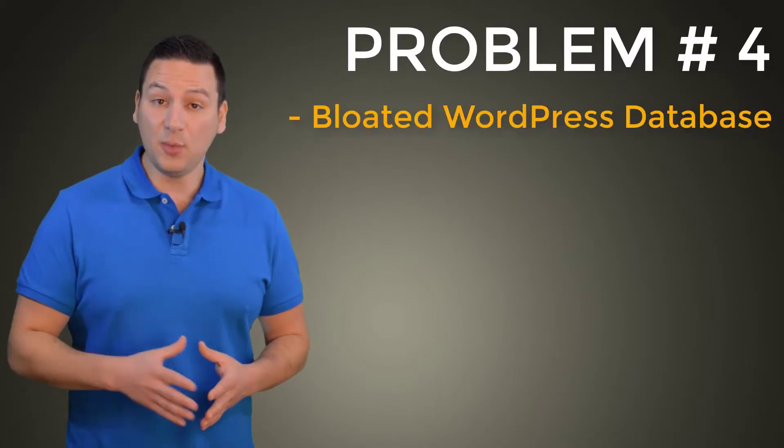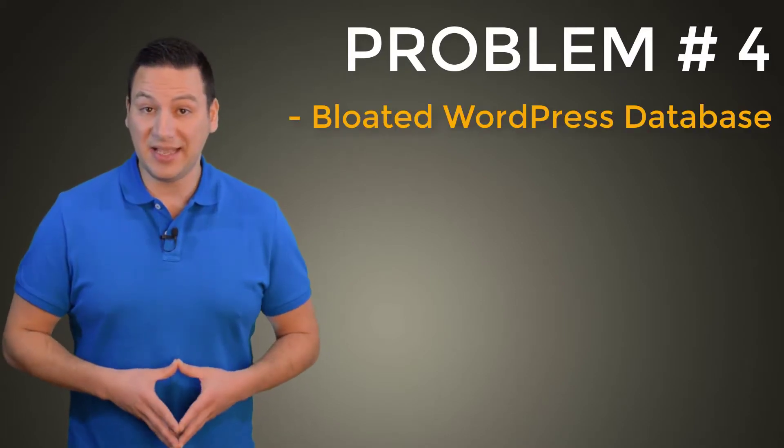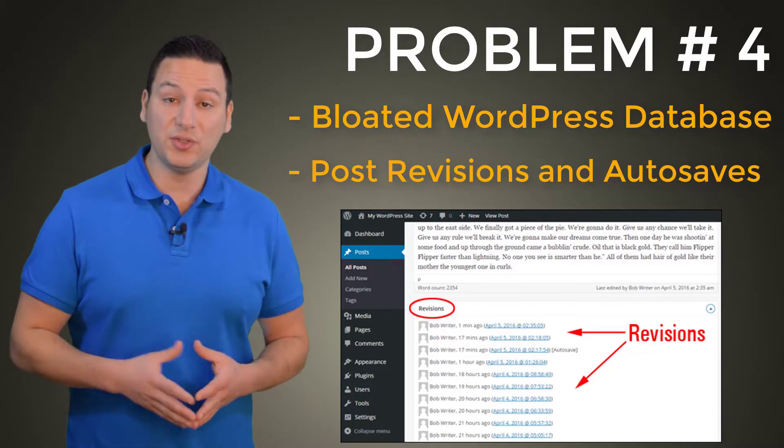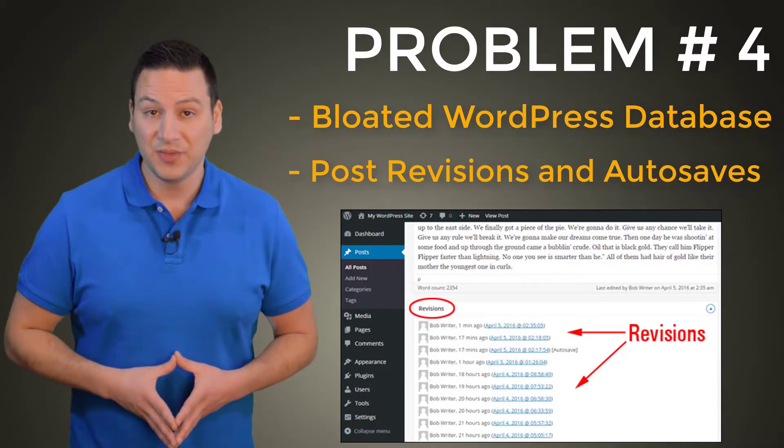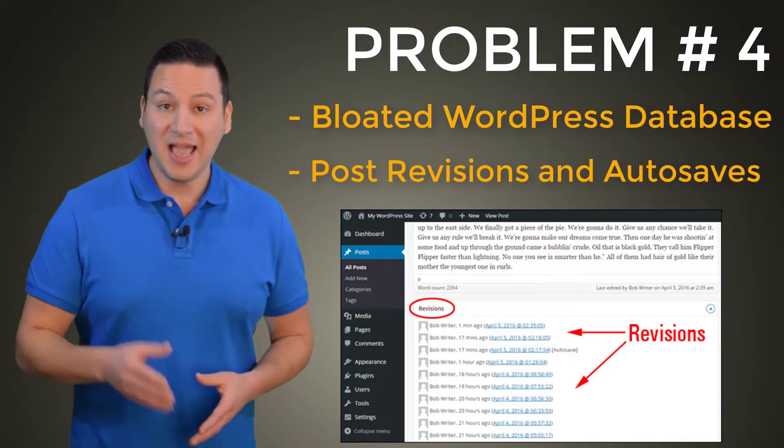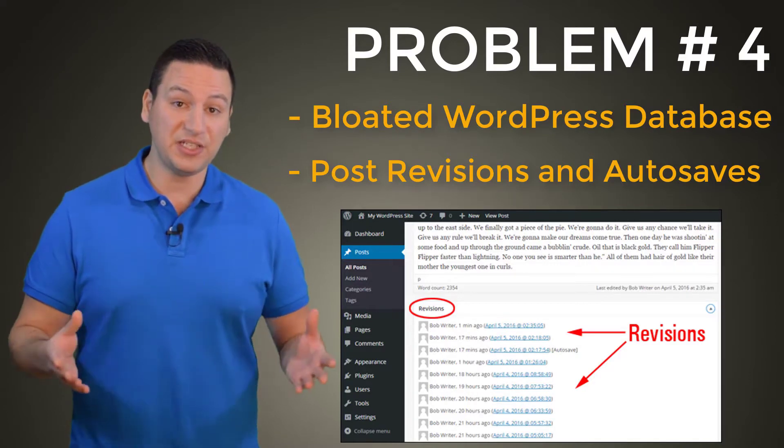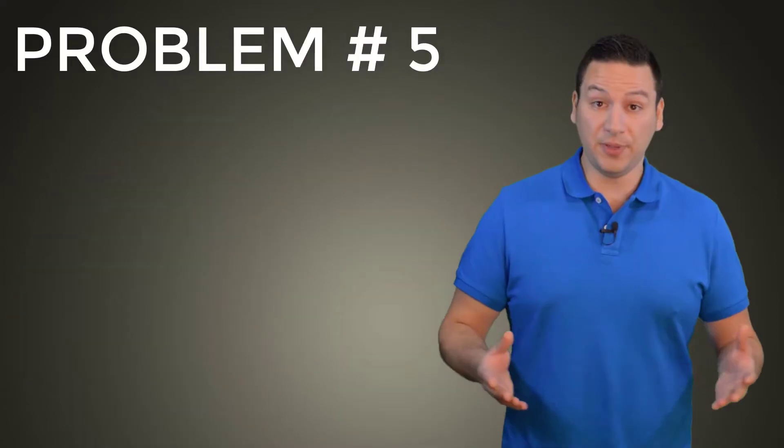Problem number four, we unknowingly bloat our WordPress database with post revisions, auto saves and orphan data. Which means a huge increase in processing power and higher server costs, especially when your site gets bigger.